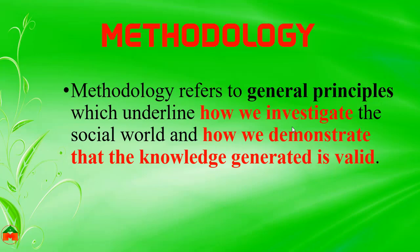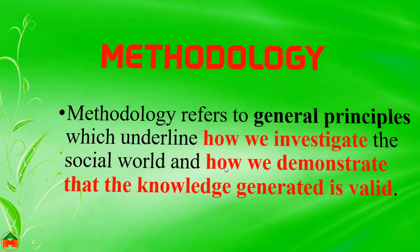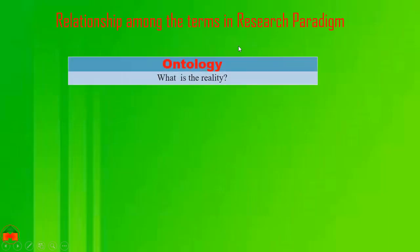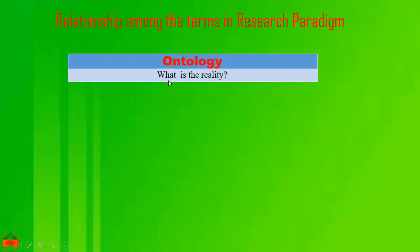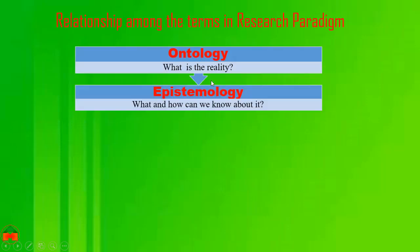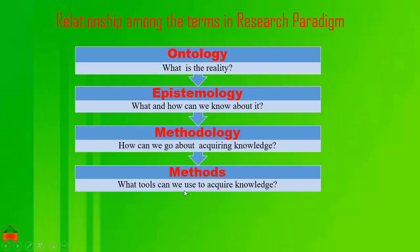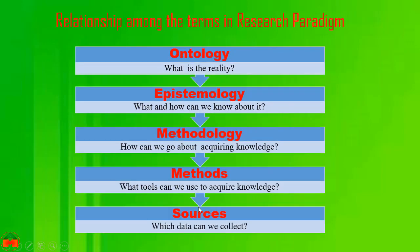Now we can see the relationships amongst the terms in research paradigm. Ontology is concerned with what is the reality. Epistemology is concerned with what and how we can know about it. Methodology addresses how we can go about acquiring knowledge. Methods refer to what tools we can use to acquire knowledge. Sources refer to which data we can collect.